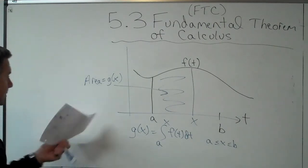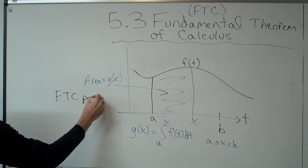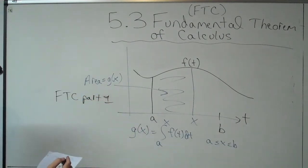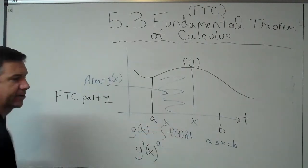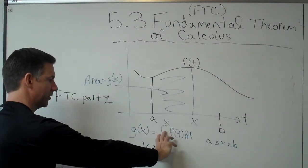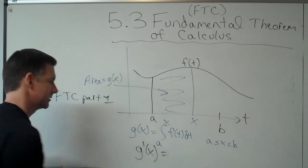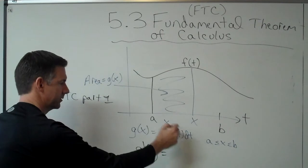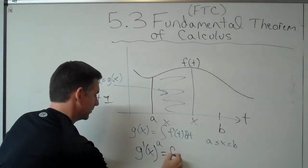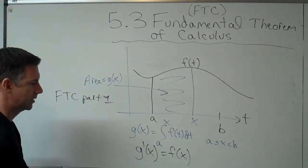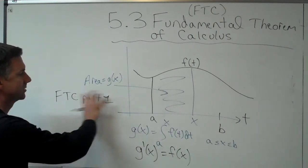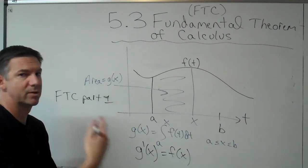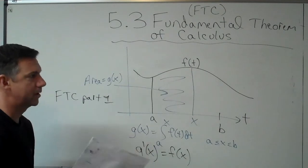The fundamental theorem of calculus — this is the FTC, part one. It says that if you have this particular function like this and you were to take the derivative of it, then the derivative would actually undo the integral, because they're opposite operations. It would get rid of the integral, and then you'd be left with this function. The only difference is that the top limit of integration actually goes in for this variable. So g prime of x actually equals f of x.